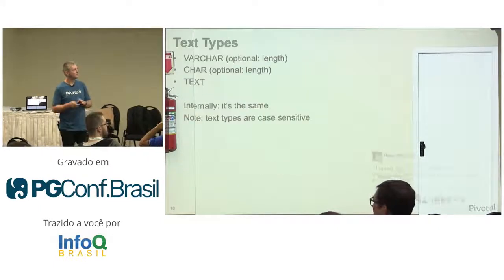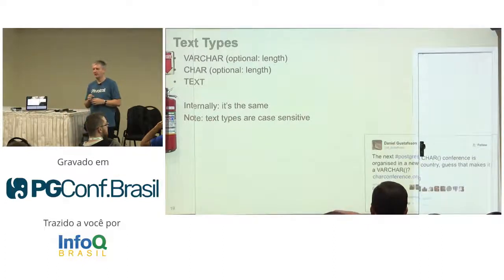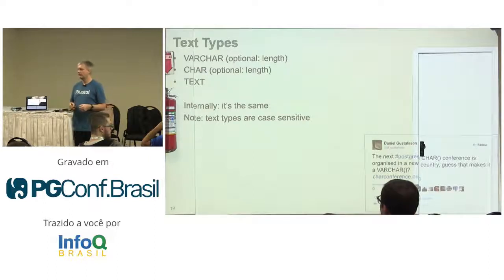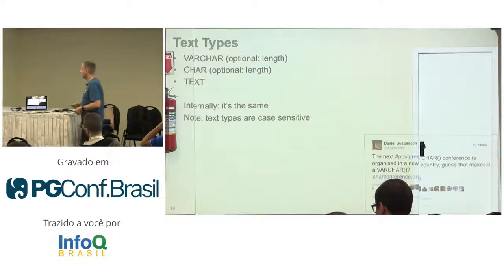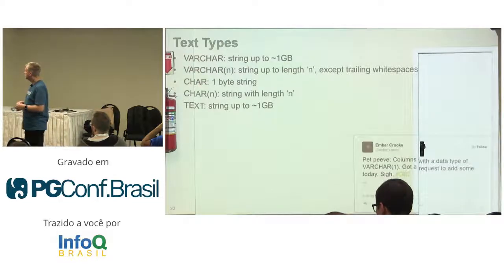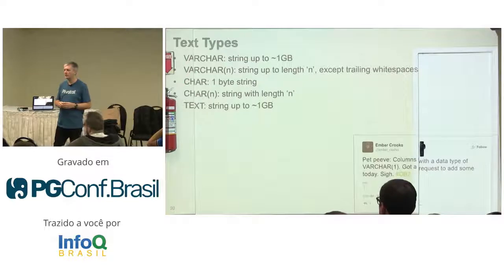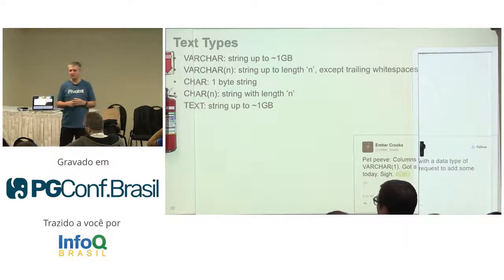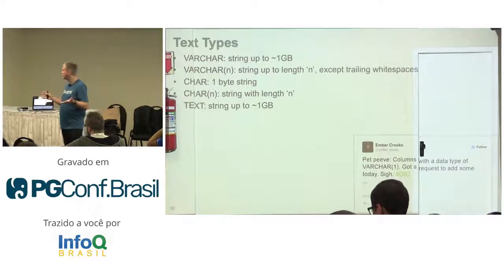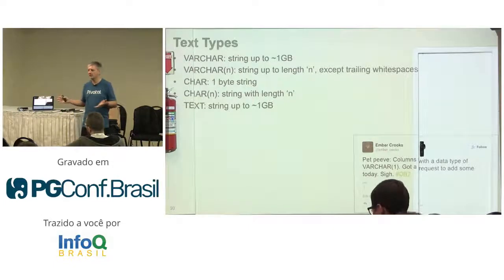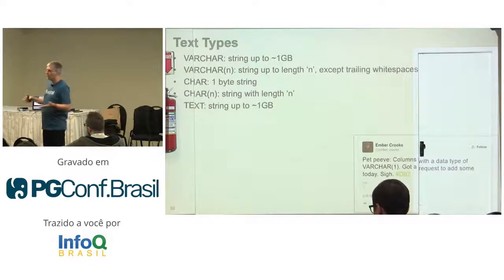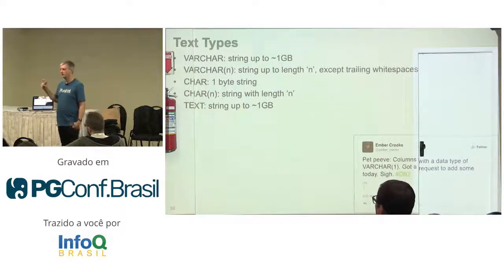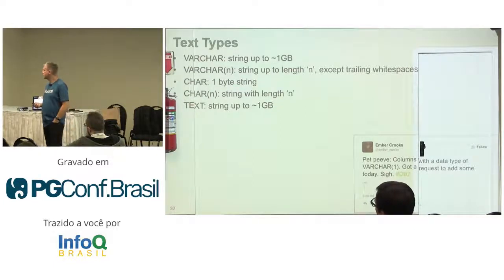Let's dive in with text types. We have three different text types in Postgres, and unlike other databases, internally it's the same type. So if you choose VARCHAR or if you choose TEXT, internally it's all the same. VARCHAR or TEXT can store up to roughly a gigabyte of text in one row and one column. For VARCHAR you can specify a length — you don't have to. If you do not specify a length for CHAR, it's actually just one byte, which is likely not what you want.